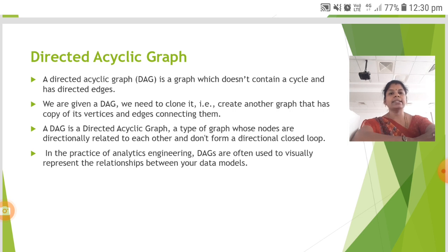A DAG is a directed acyclic graph, a type of graph whose nodes are directionally related to each other and don't form a directional closed loop. In the practice of analytics engineering, DAGs are often used to visually represent the relationship between your data models.